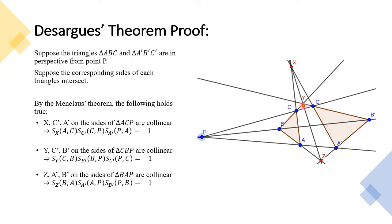Similarly, the points Y, C', and B' on the sides of the triangle CBP are collinear. So by Menelaus's theorem, the following expression of the signed ratio holds true. And lastly, the points Z, A', and B' on the sides of the triangle BAP are collinear. So by Menelaus's theorem, the following expression of the signed ratio holds true.